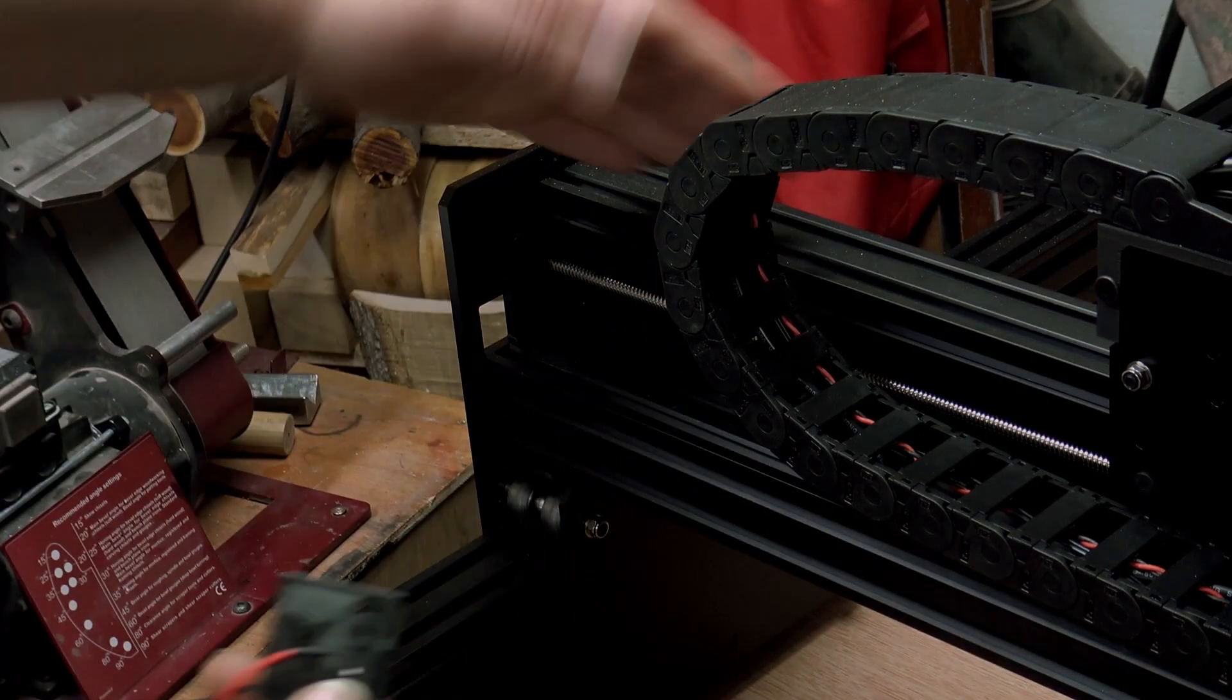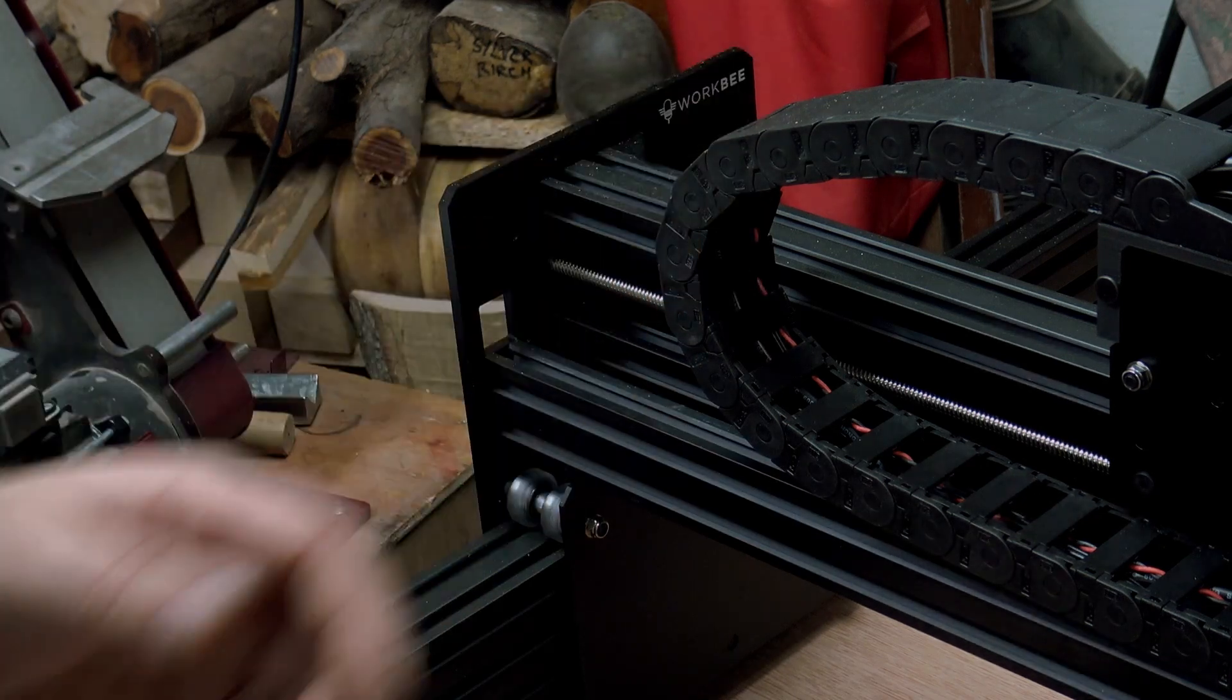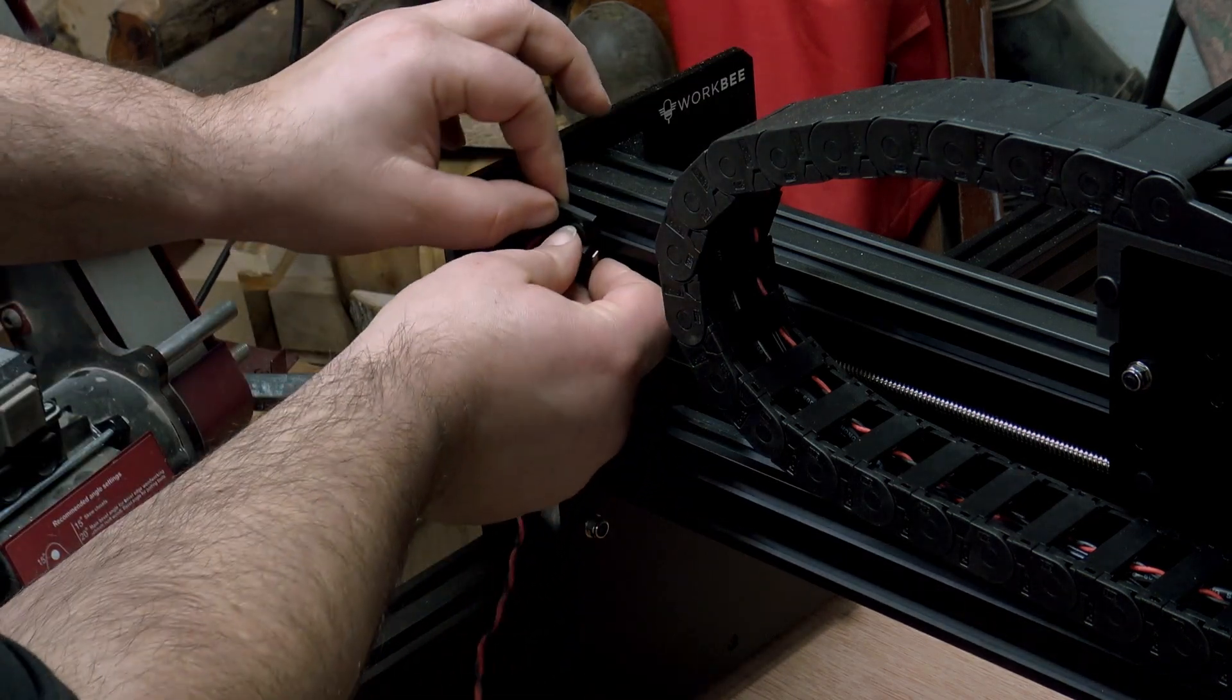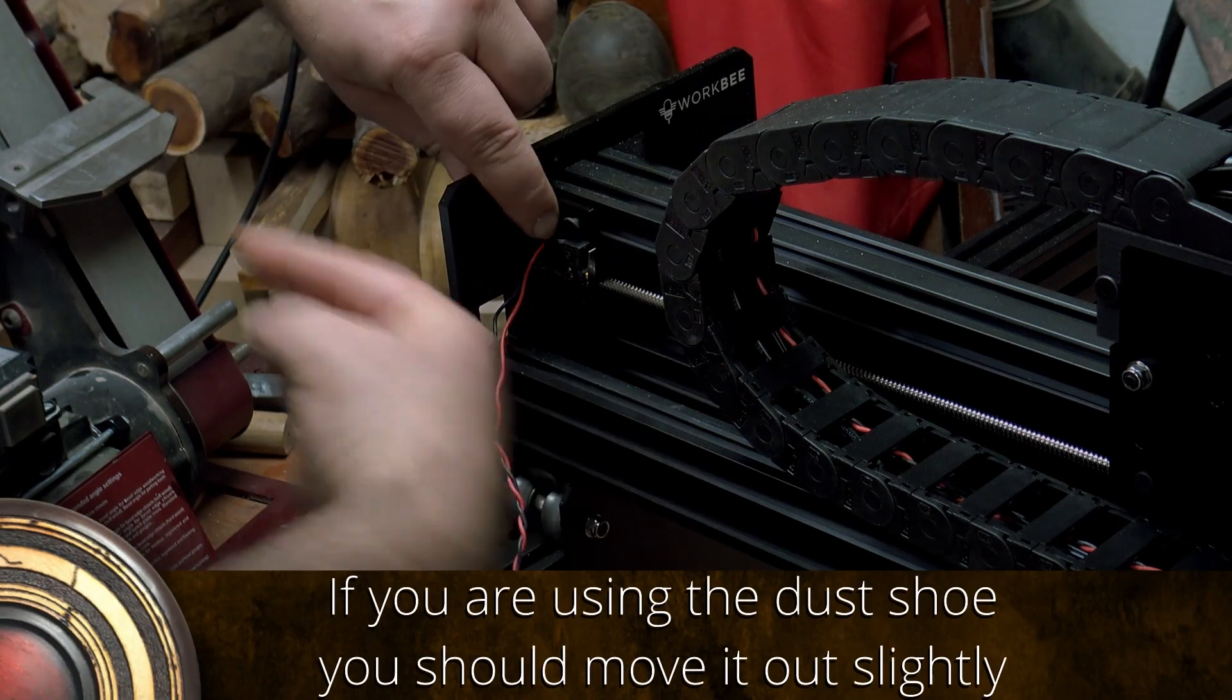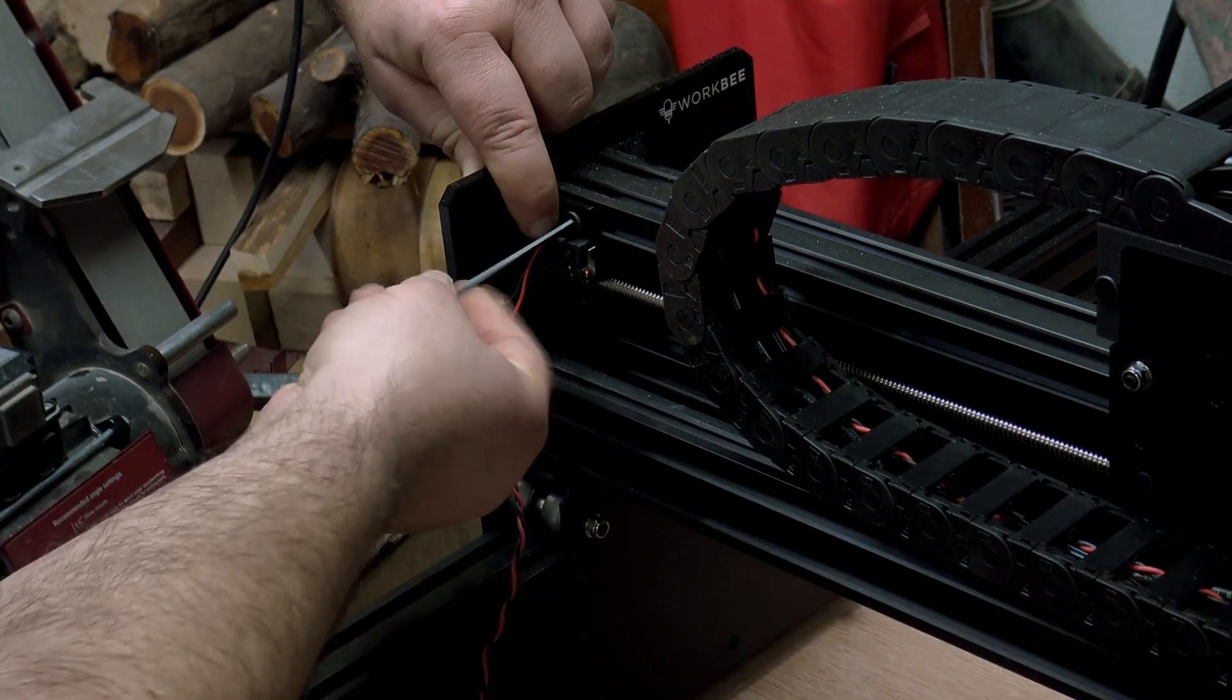The position for this is on the back of the X-gantry towards the left-hand side when you're looking at it from the rear. Using the drop-in bolt it just goes into the top, hold it up against that plane and hold it square as well, and just tighten it up.